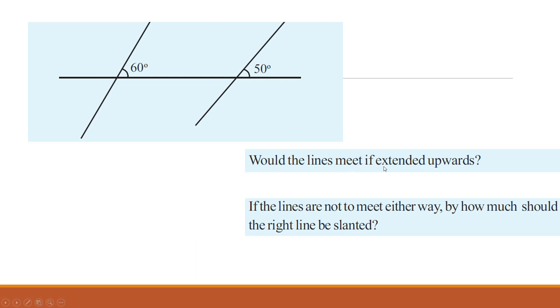Would these lines meet if extended upwards? If the lines are not to meet either way, how much should the right line be slanted?